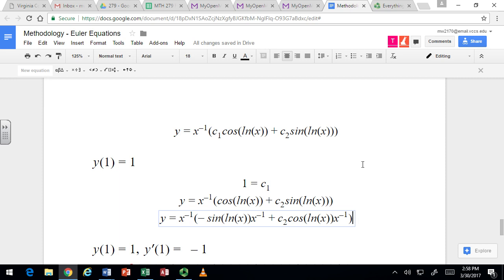Alright. So that's the derivative of that. To finish up the product rule, we now do the derivative of x to the negative 1, which is negative x to negative 2. And then just multiply by this whole thing. Alright. So let's try to then enforce this other initial condition.